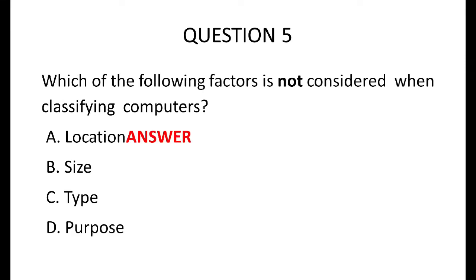Number five: which of the following factors is not considered when classifying a computer? That is location. We consider size — classification by size involves mainframe, mini-frame, supercomputers, and microcomputers. By type, we have analog, digital and hybrid. By purpose, we have special purpose and general purpose computer.